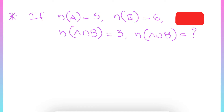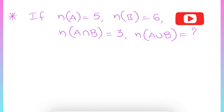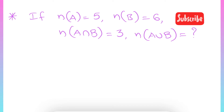The question is: if n(A) equals 5, n(B) equals 6, n(A ∩ B) equals 3, then find the value of n(A ∪ B). Related to n(A), n(B), n(A ∩ B), and n(A ∪ B), we have one formula.